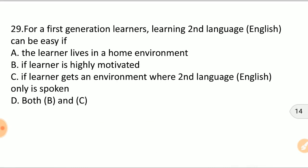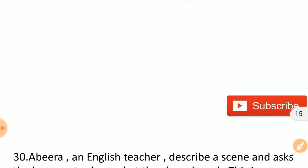For first generation learners, learning second language English can be easy if: A) the learner lives in a home environment, B) if learner is highly motivated, C) if learner gets an environment where second language is spoken, or D) both B and C. The right answer is D, both B and C. If learner is highly motivated and if learner gets an environment where second language is only spoken.